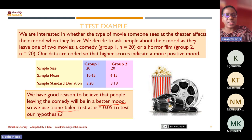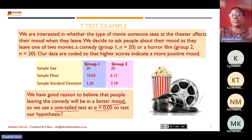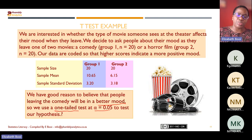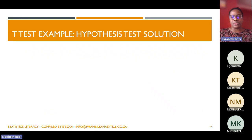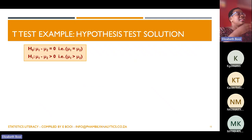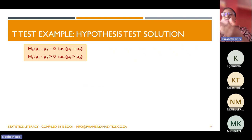Group one had a sample mean score of 10.65 and group two had a sample mean of 6.15. The standard deviation for group one was 3.20 and for group two was 3.18. They've told us we need to use a one-tailed test. 'Better mood' implies greater than, which is another hint from the statement. They've also given us the level of significance of 0.05, which is important when finding critical values.